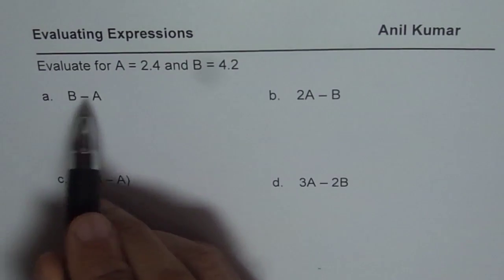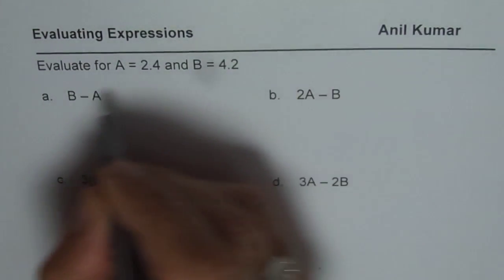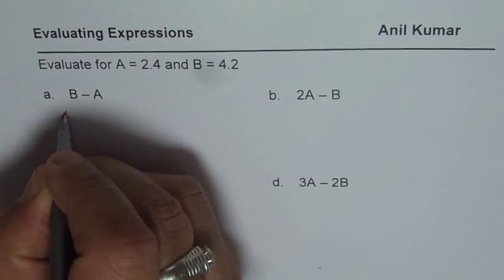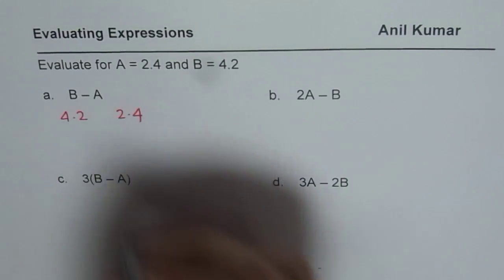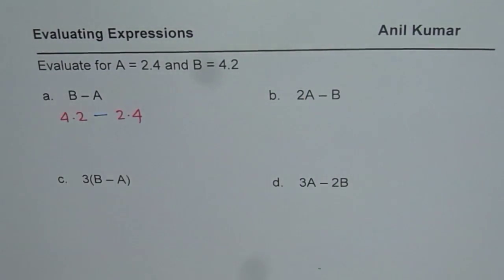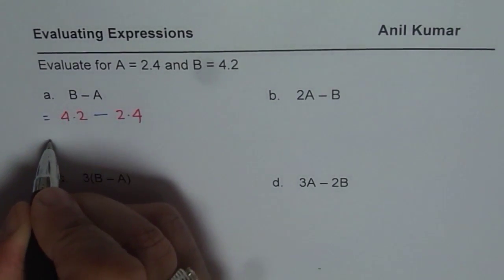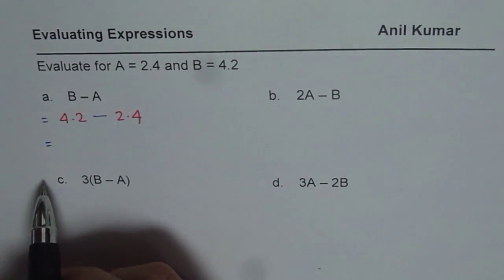So here B is 4.2, A is 2.4. So we can substitute their values. B is 4.2, so I am writing 4.2 for B, A is 2.4, 2.4 for A. The operation being performed is take away. So we will do 4.2 minus 2.4 to get our answer.